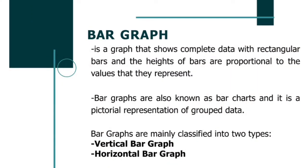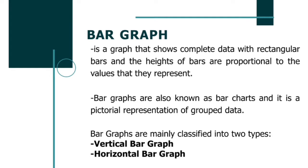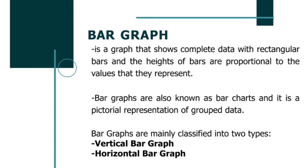A bar graph is a graph that shows complete data with rectangular bars, and the heights of bars are proportional to the values that they represent. Bar graphs are also known as bar charts, and it is a pictorial representation of grouped data. Bar graphs are mainly classified into two types: vertical bar graph and horizontal bar graph. Bar graphs are excellent to represent data because they give a visual display for comparing quantities in different categories.